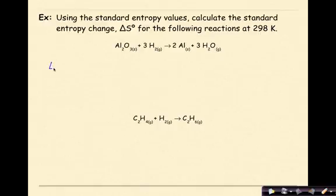I have aluminum oxide plus hydrogen gas yields solid aluminum and water as water vapor. So the way that we're going to set this up is we're going to do delta S naught is equal to the sum of the products.